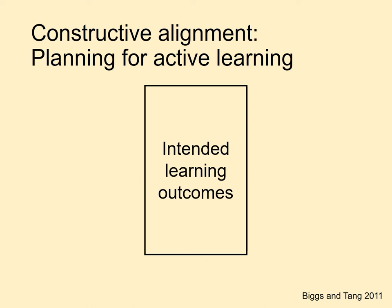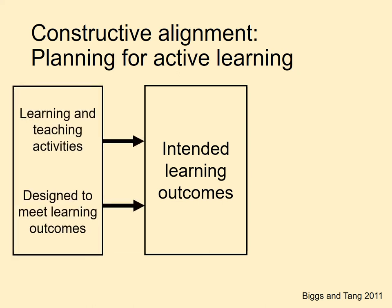What that path looks like — the direction, the length, the steepness, and so on — is determined by the learning and teaching activities that you select. Most ILOs can be achieved in a variety of ways, so there are rarely right or wrong teaching and learning activities for a given set of ILOs, though some may work better with a particular group of students or in a particular learning environment, for example if you're teaching online versus face-to-face. The key is to select activities that will nudge students along in the right direction rather than sending them off on a tangent.